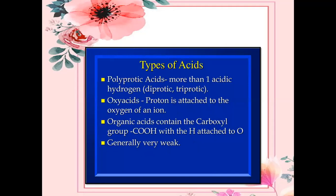As a revision, let's review the types of acid. Polyprotic acids have more than one acidic hydrogen — diprotic, triprotic, tetraprotic, etc. Oxyacids are acids where the proton is attached to the oxygen of the anion. Organic acids contain the carboxyl group — COOH — with the hydrogen attached to oxygen. Generally, organic acids are very weak.